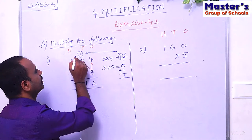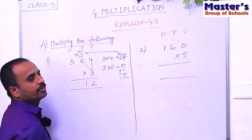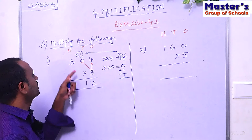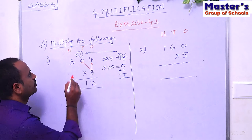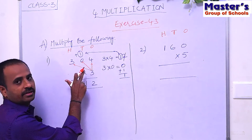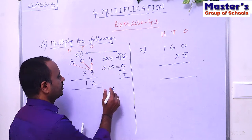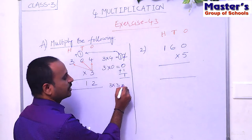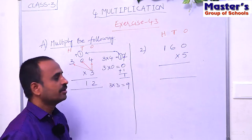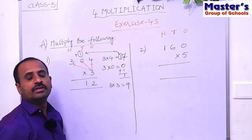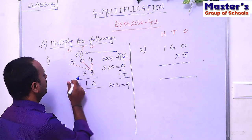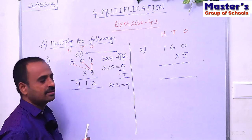Now multiply the digit in the hundreds place with 3. The digit in hundreds place is 3, so multiply 3 with 3 — that is 3 × 3. Children, 3 threes are 9. There is no carried number here, so simply write 9 under hundreds place. The answer is 912.